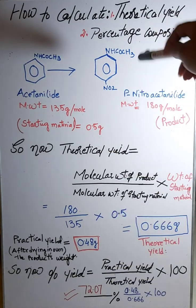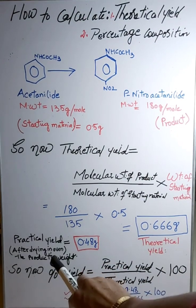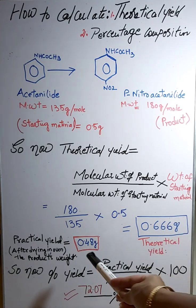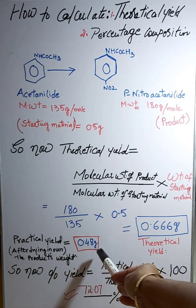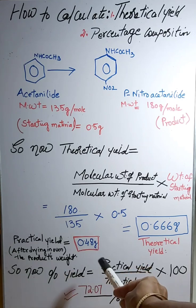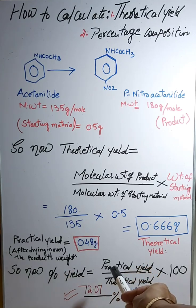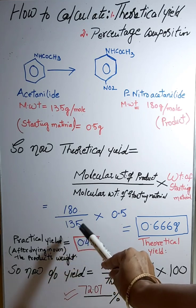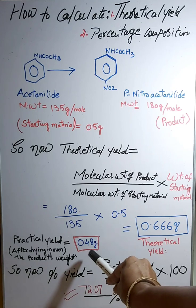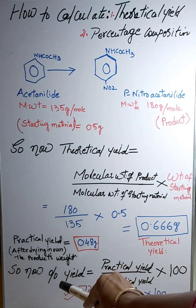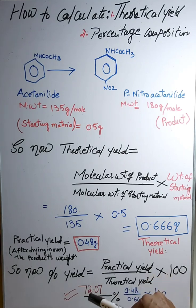Now for the percentage yield: after preparing para nitro acetanilide, you weigh the compound. Suppose the weight comes to 0.48 grams. You dry it in the oven so no solvent remains on the filter paper, which would otherwise add to the weight of your precipitates. This weight you obtained after drying is called the practical yield — in this example, 0.48 grams.